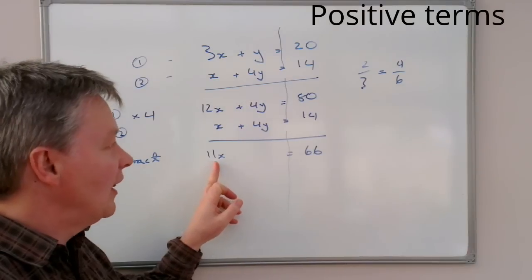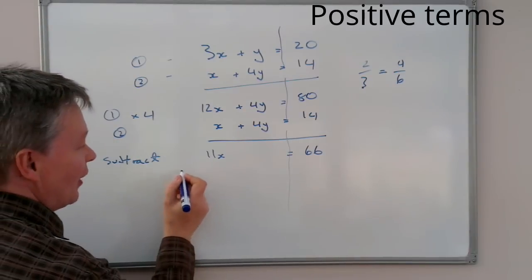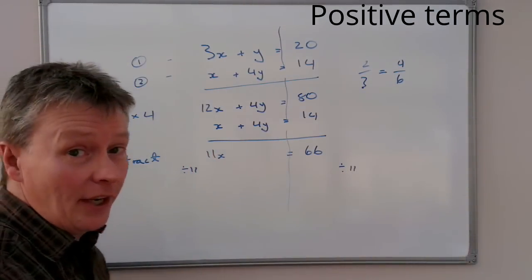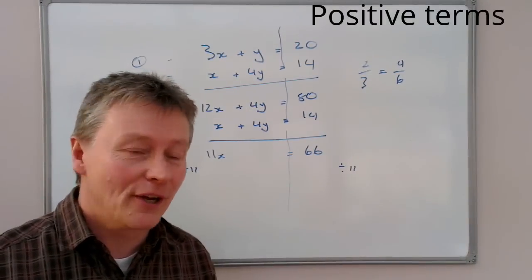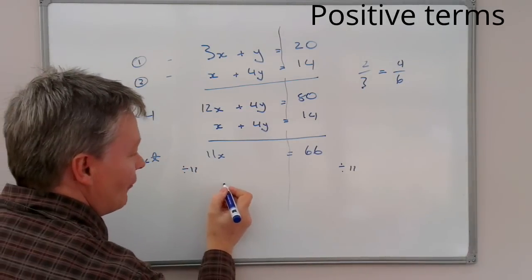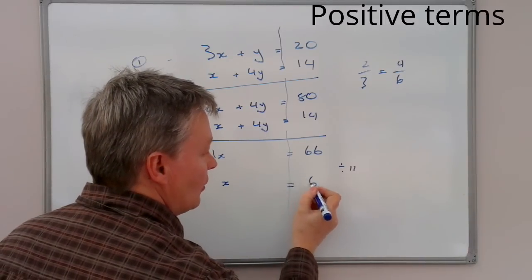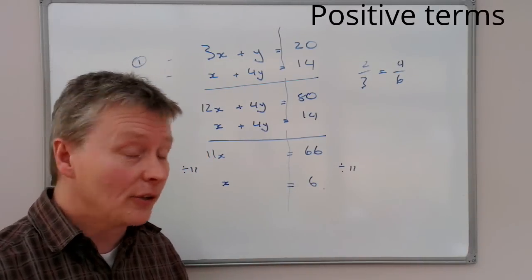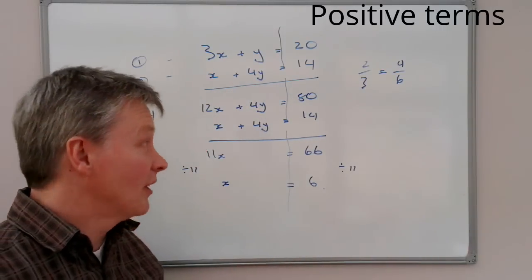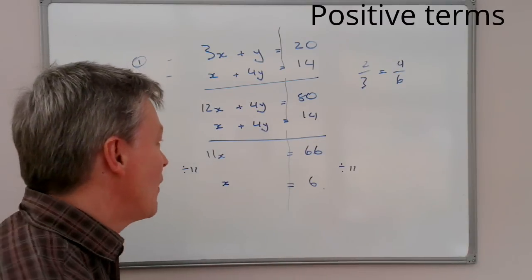And then 80 take away 14 is going to be 66. So, I've now got a value of 11x equals 66. And I'm sure you'll also be able to appreciate that if I now divide both sides by 11 in order to maintain the balance. And again, if you have a look at some of the algebra videos, you'll see I do that quite a lot in my videos. So, that will give you 11x divided by 11 is one single value of x and that's going to equal 6. So, in other words, I've now calculated a value of x that satisfies these equations. And actually, it also satisfies those equations as well, because they're no different.